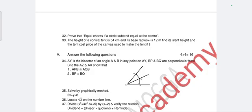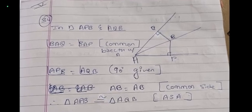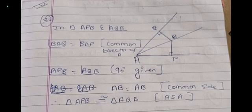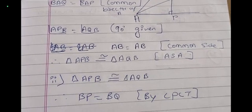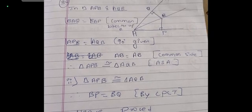Question 34: from the given figure with certain points, prove two triangles are congruent. In triangles APB and AQB: angle BAQ = angle BAP (AB is the bisector of angle A), AP = AQ = 90° (given), and AB = AB (common side). By the ASA postulate, triangle APB ≅ triangle AQB, so BP = BQ. For any congruence proof, identify two triangles, prove congruence by ASA, SSS, or SAS, then state the required result.